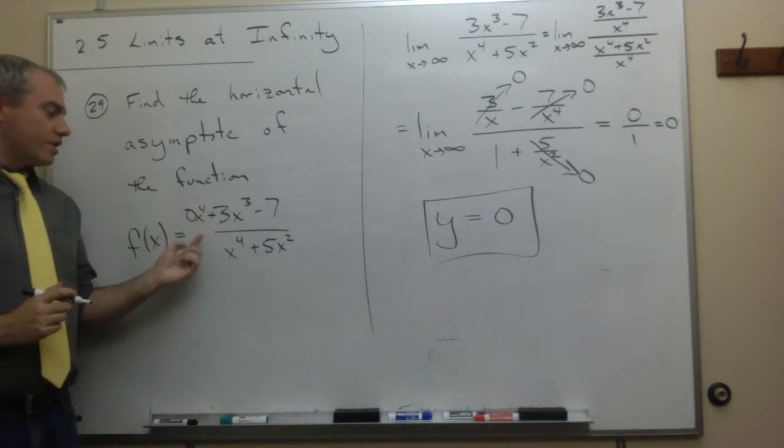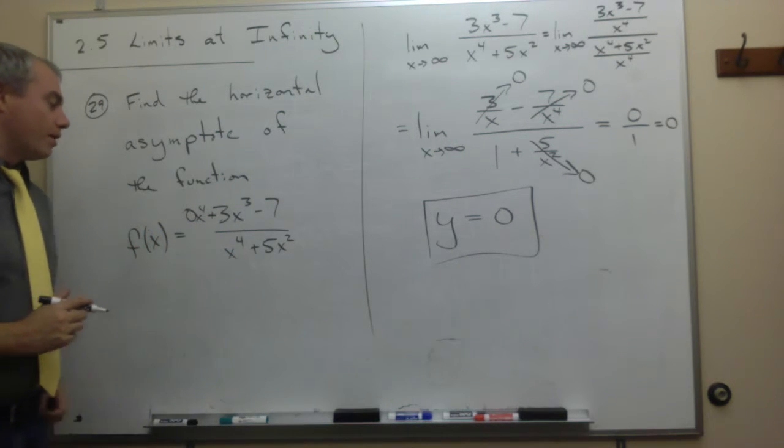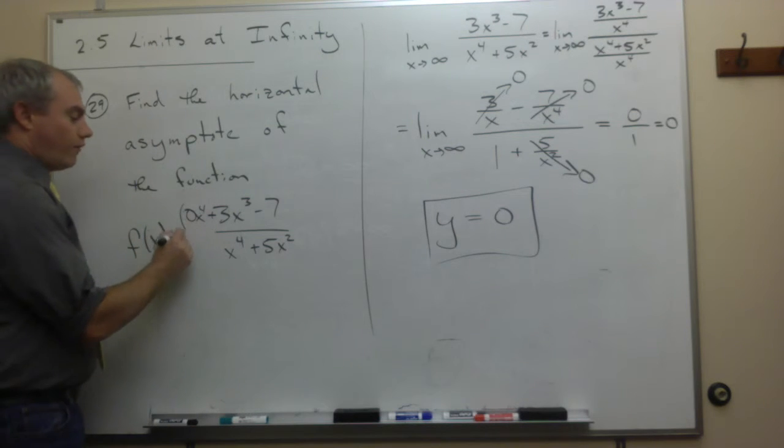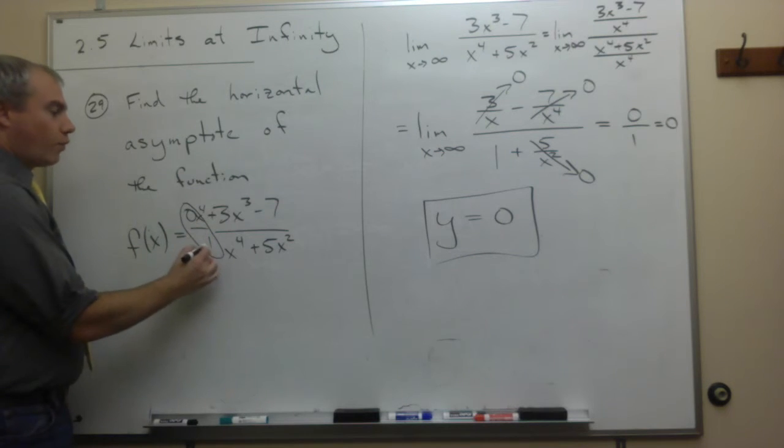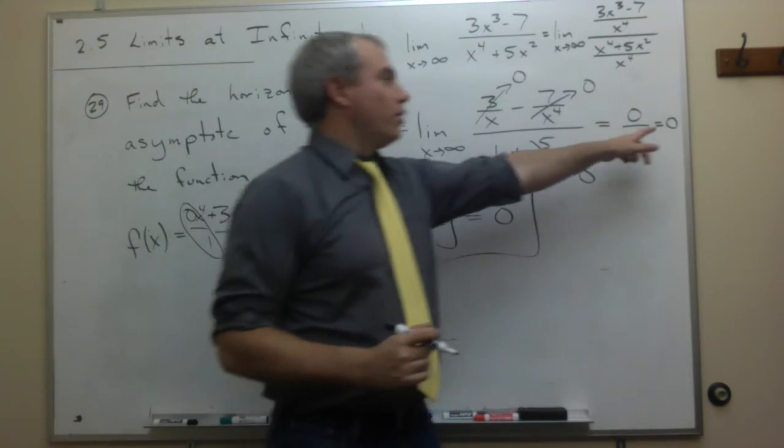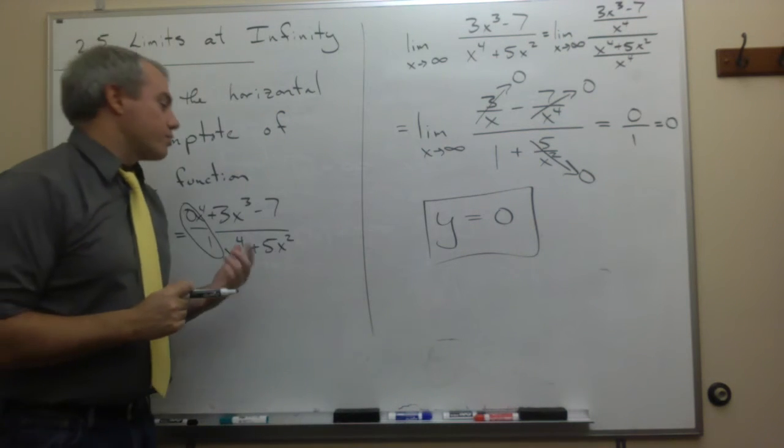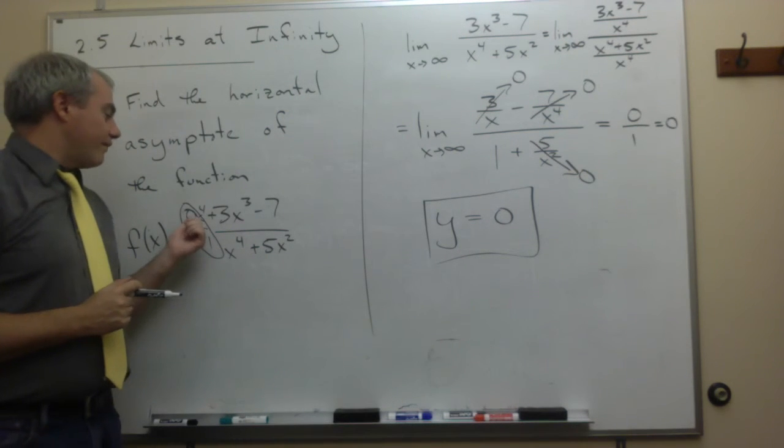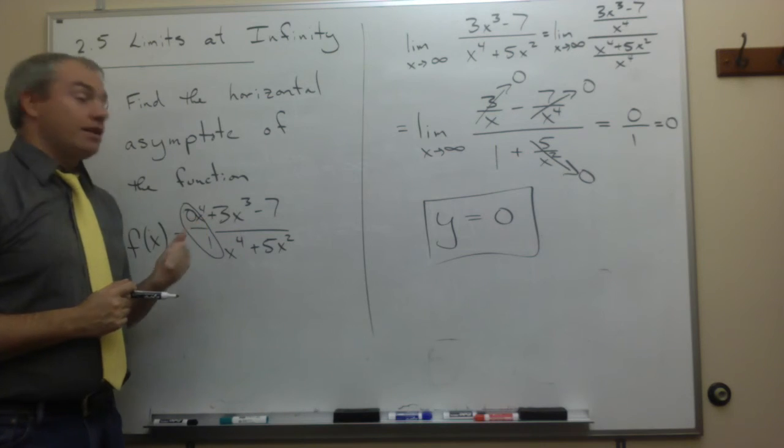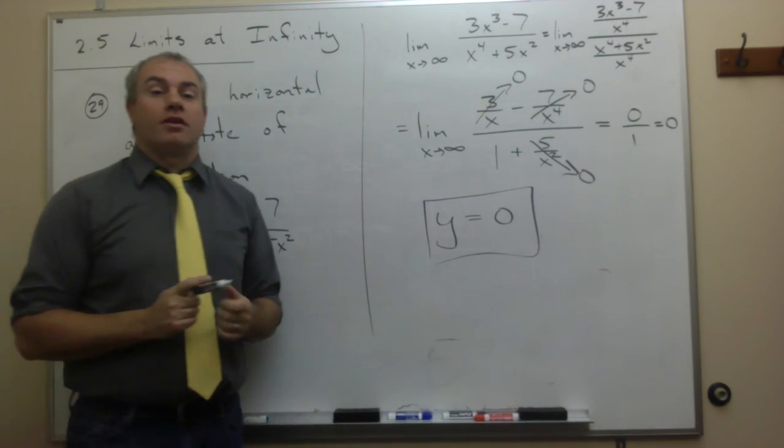0 x to the fourths on top, 1 x to the fourths on bottom. So if I want to take the coefficients out in front of the x to the fourths, then I get 0 over 1, which is 0, which is exactly the answer. So that trick does work here as well. You just have to remember that you can't see the x to the fourths that are showing up.